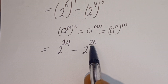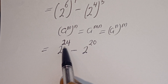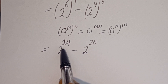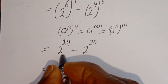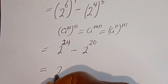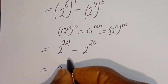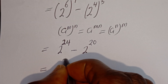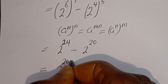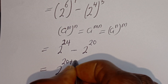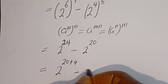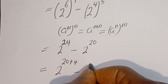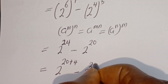Then here we have 2 to the power of 24 and here we have 2 to the power of 20. This can be written as 2 to the power of 20 plus 4, minus 2 to the power of 20.